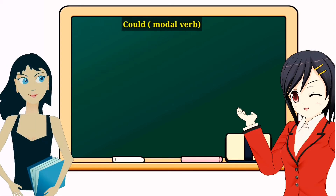Hello everyone. Today we are going to discuss the modal word 'could' — simply, we are going to learn its functions in a sentence. It is used to show possibility. It means if you say something that is possible to happen, you can use 'could'.